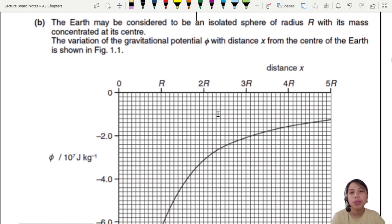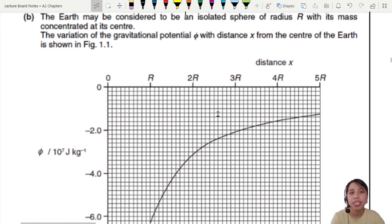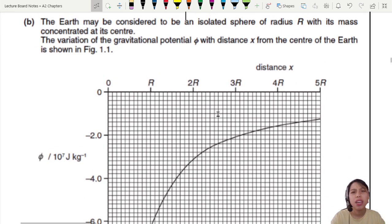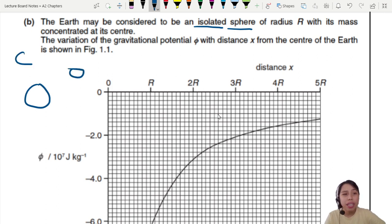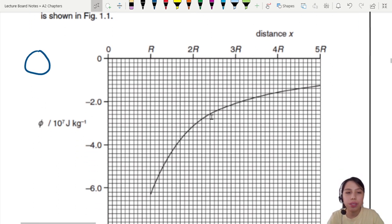So the Earth may be considered to be an isolated sphere of radius R with mass at the center. Why do they say isolated? Because if there are other planets nearby, they all might affect each other, affect the overall potential. So we assume there's nothing else, just one planet with its own potential and its own field. So then this planet has its gravitational potential with this graph here given to us. Okay, very good.